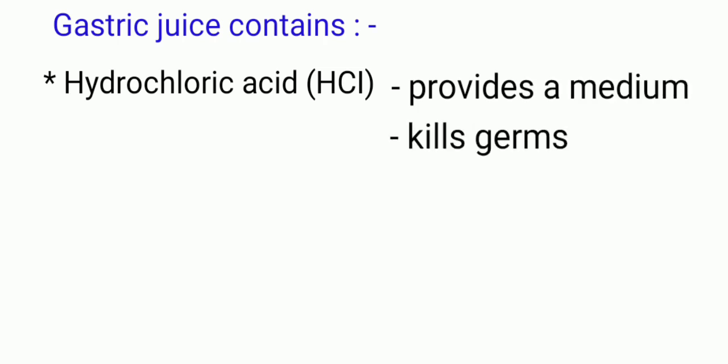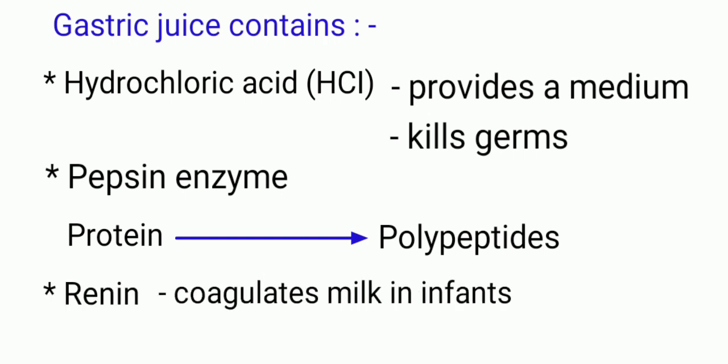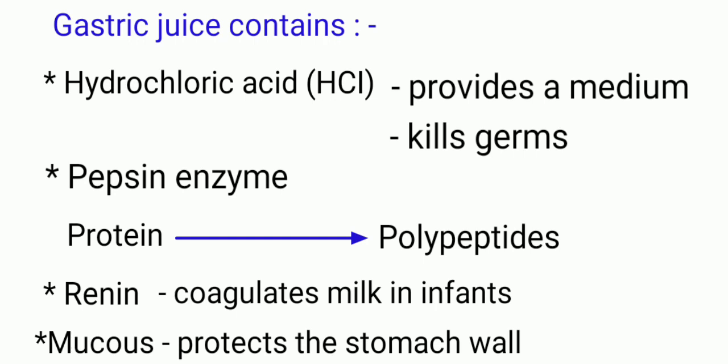The gastric juice contains hydrochloric acid, pepsin, renin, and mucus. Hydrochloric acid provides the acidic medium for the activity of the enzyme pepsin and kills the majority of germs that enter the digestive tract with the food. Pepsin enzyme starts protein digestion to produce polypeptides. Renin, which is produced only in the gastric juice of infants, coagulates or solidifies the protein in milk. Mucus lubricates the food and protects the stomach wall from physical and chemical damage, including the action of the enzymes.